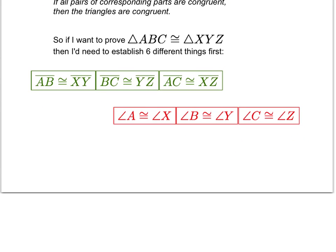The nice thing is we don't need to have all six things. We've got a couple of theorems that allow us to cut that number in half. I'll give you a couple of examples in order to prove that triangles are congruent.